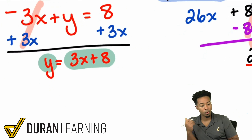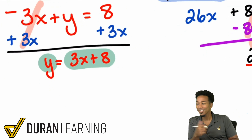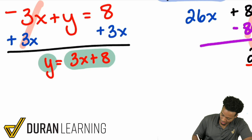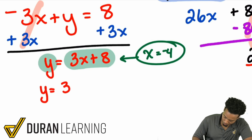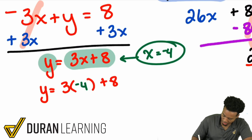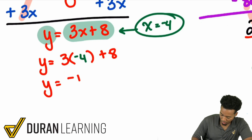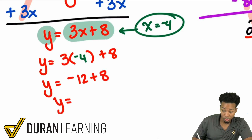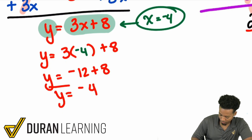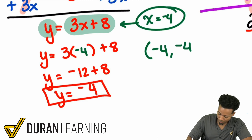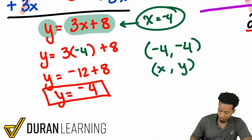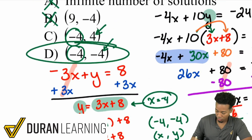The easiest approach is to use the equation we already solved: Y equals 3X plus 8. We now know X equals negative 4, so we plug that in: Y equals 3 times negative 4 plus 8. That gives us negative 12 plus 8, which equals negative 4. So we have Y equals negative 4, and our final answer is negative 4, negative 4 — that's answer D.